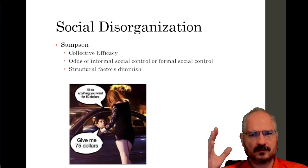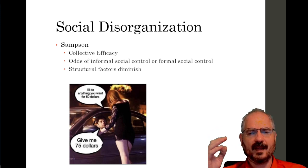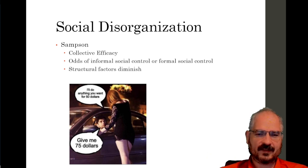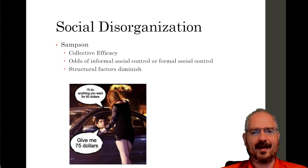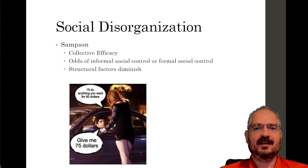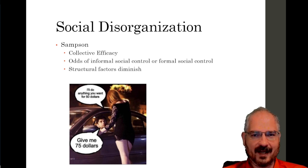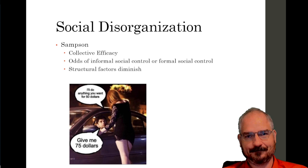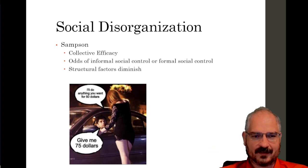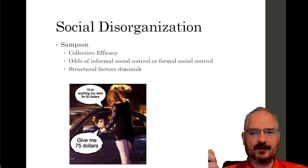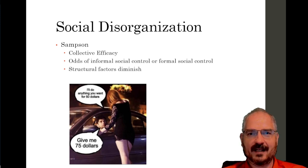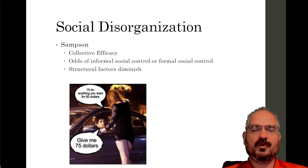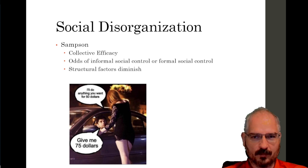Sampson came along a few decades later and expanded on this idea, talking more about how the process of social disorganization works to create areas where crime happens. Sampson coined the term collective efficacy, meaning the ability of a geographic area to either exercise informal social controls or to initiate the process of formal social controls.